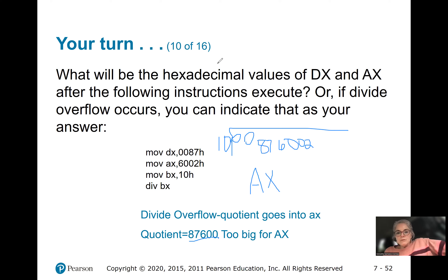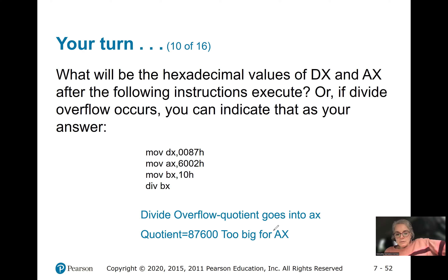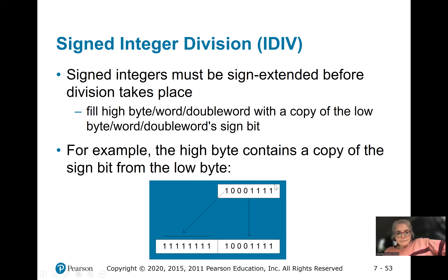Make sure you run this one so you can see how it behaves. Since the answer doesn't fit into AX, it sets the overflow flag and we don't get the correct answer. When we divide this number by 10, the quotient is too large — it only fits 7600 into AX, so it overflows. In the next video, I'm going to show you how we do signed division using IDIV.